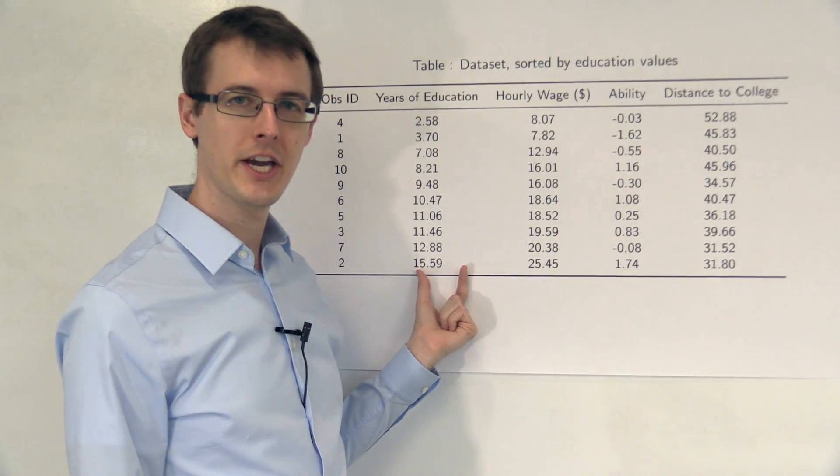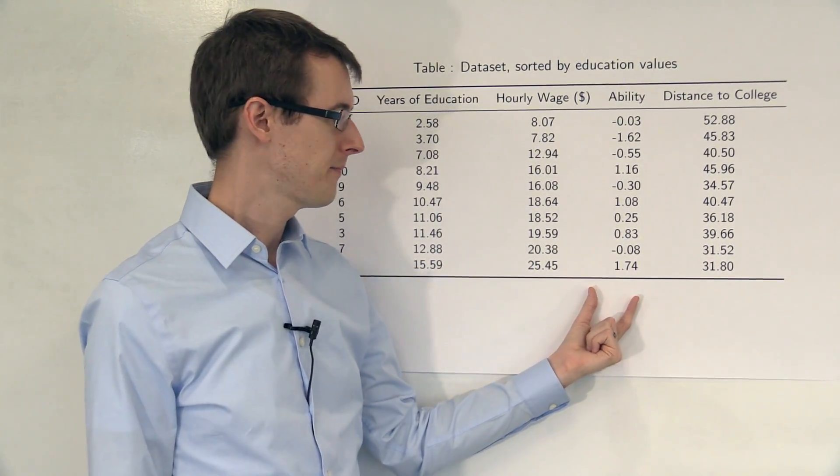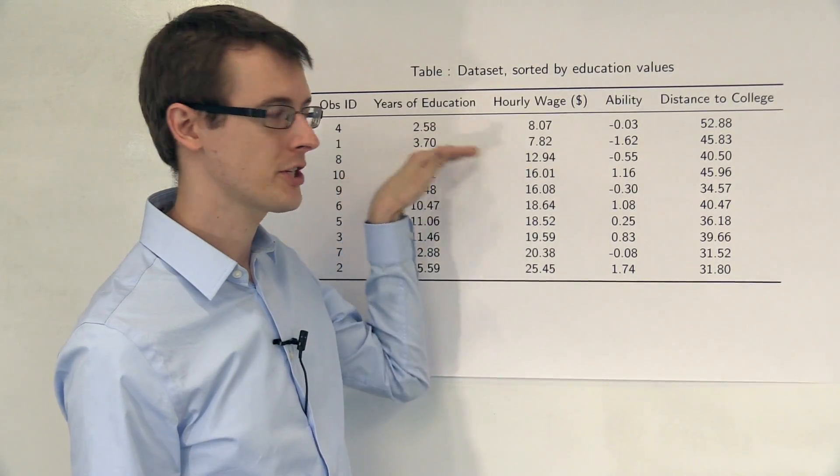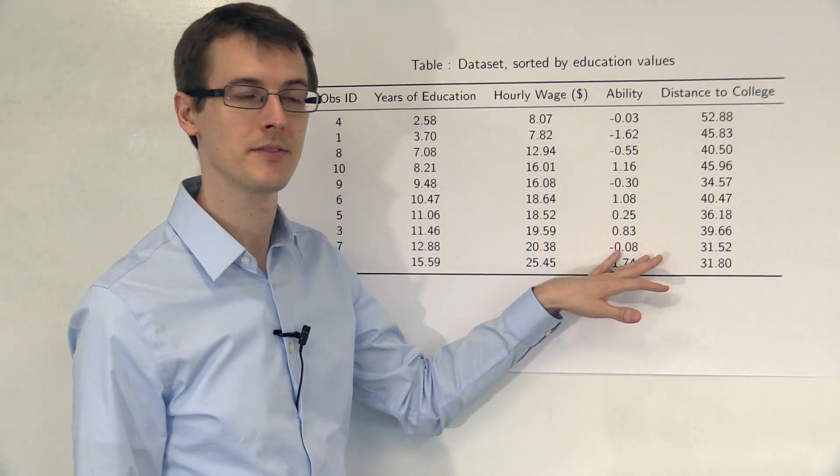We also see that people with more education tend to have higher ability. So here, there's a bunch of negative signs up here with the people with less education, whereas people with more education tend to have positive signs.